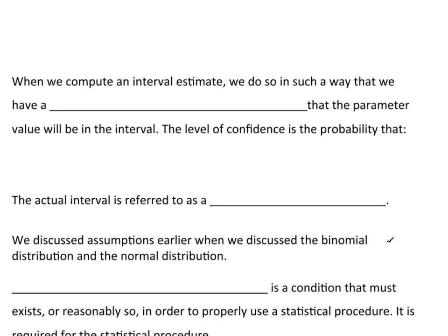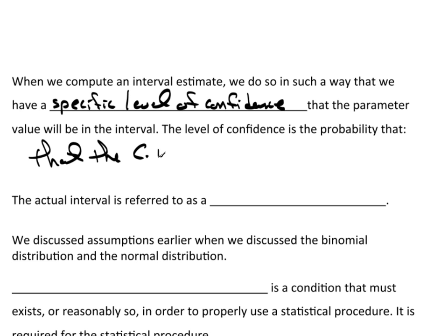Now when we actually compute an interval estimate, we do so in such a way that we have a specific level of confidence. Confidence that the parameter value will actually be in the interval. The level of confidence is actually the probability that the confidence interval, I'm going to just abbreviate that CI, will contain the parameter.